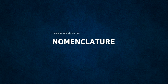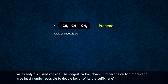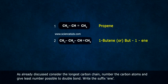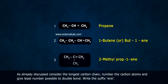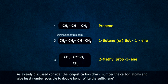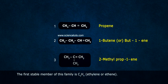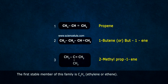Nomenclature: As already discussed, consider the longest carbon chain. Number the carbon atoms and give least number possible to double bonds. Write the suffix ene. The first stable member of this family is C2H4, ethylene or ethene.